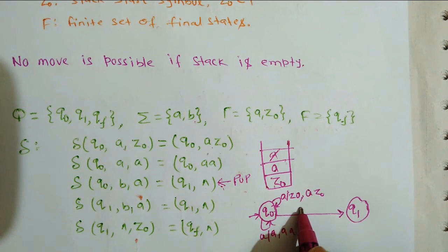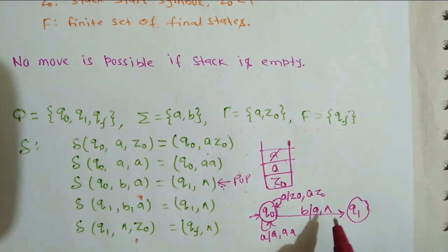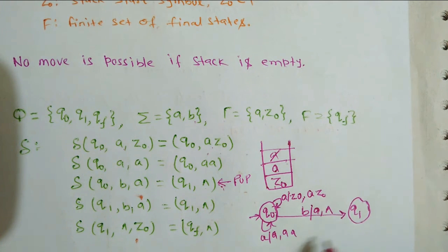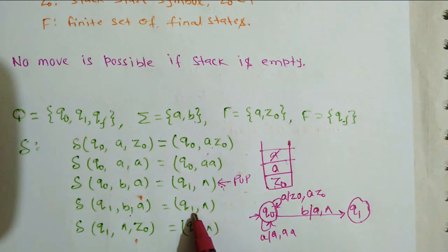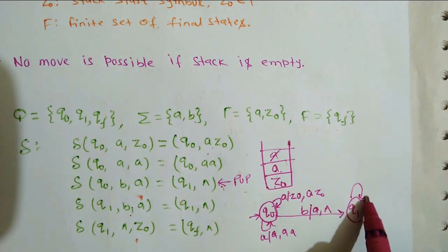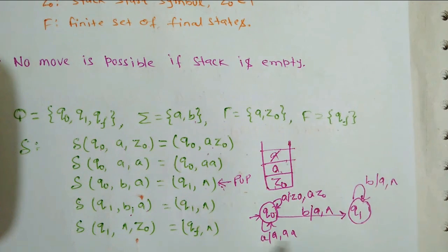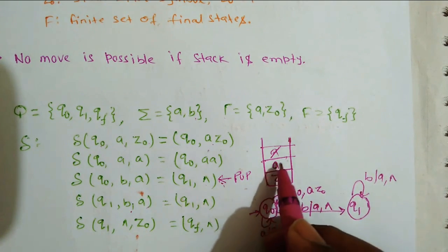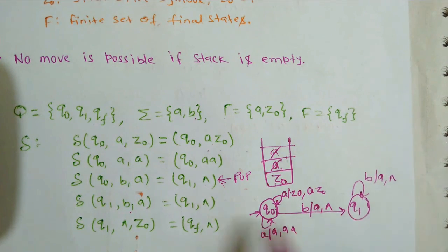If the input symbol is 'b' and the top of the stack item is 'a', it goes to state q1. On state q1, after reading symbol 'b' with 'a' on top of the stack, we are popping again. This continues — if more 'b's come and the top of the stack is 'a', it stays on the same state.